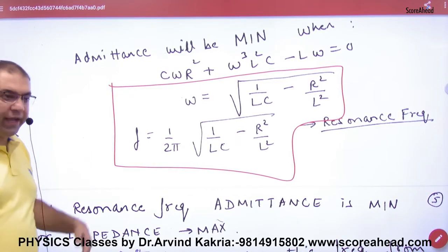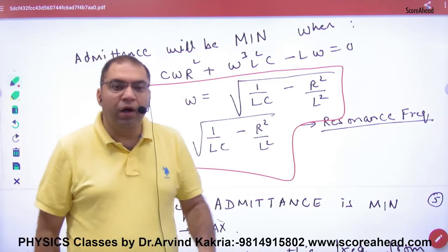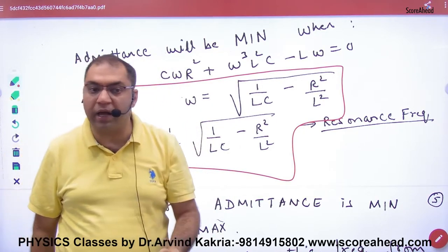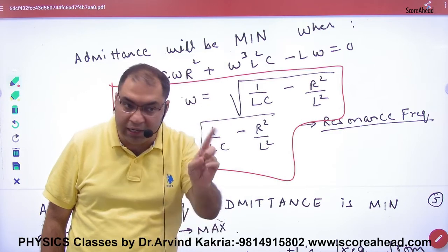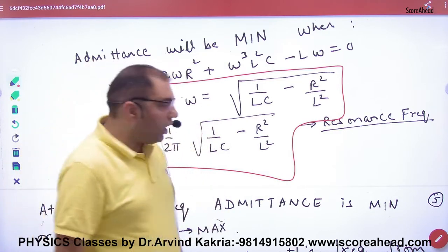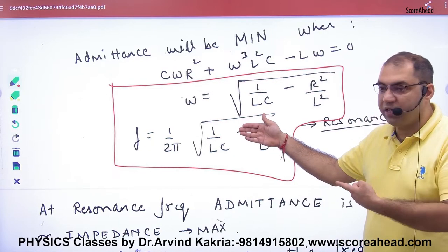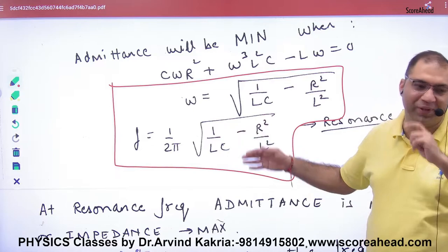Aap kahenge ki yeh to humne kabhi kiya hi nahi, humne kiya hai. Humne NCRT meh joh parallel resonance circuit kiya tha, usmeh kya liya tha, L or C, R nahi liya tha. Aap socho, agar mein yaha par R hata dun, dekho, aapka answer wahi aagaya, 1 by 2 pi root of LC resonance frequency.